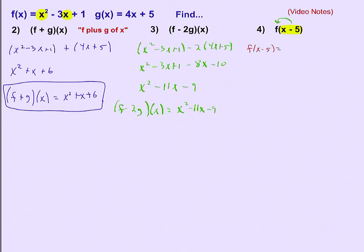So f(x - 5) is equal to, instead of x², which is what f, the function called f starts with, it'll be (x - 5)². We're taking this x - 5 and plugging it in. Minus 3 times (x - 5) plus 1.